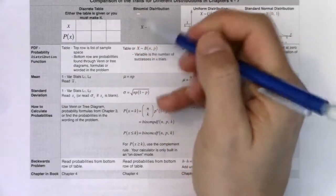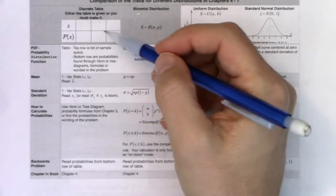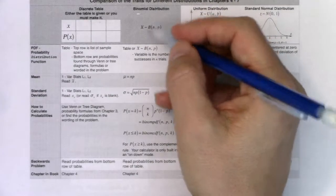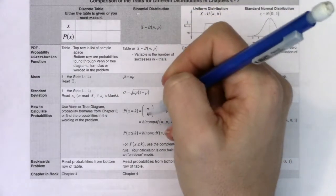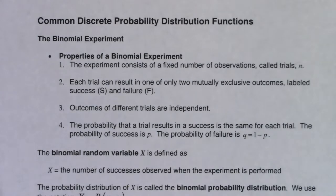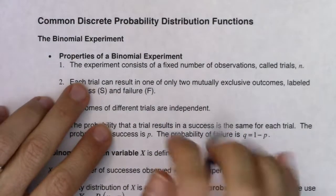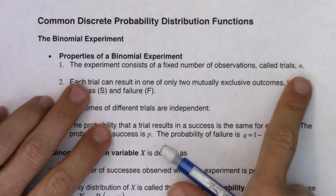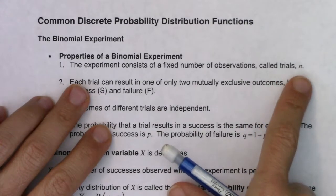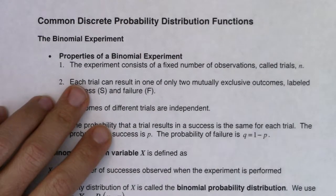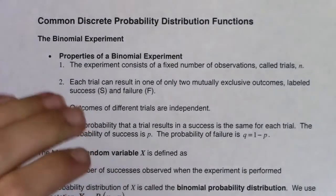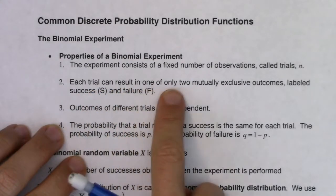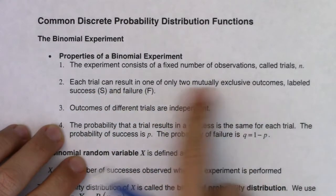A way to think about it: if you don't recognize you're in a binomial distribution and you start thinking you have to make a chart or table with 26 columns, that probably means it was a binomial distribution and there are shortcuts. So the binomial experiment has four properties. Property one: the experiment must consist of a fixed number of observations called trials — we give that the letter N.